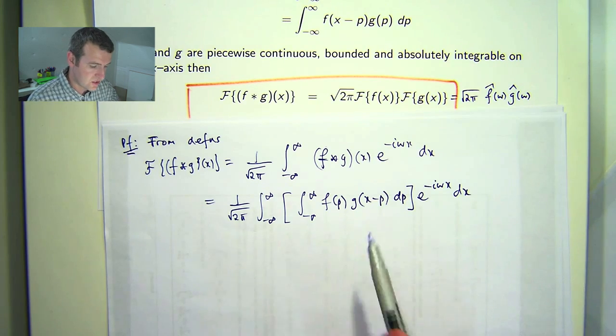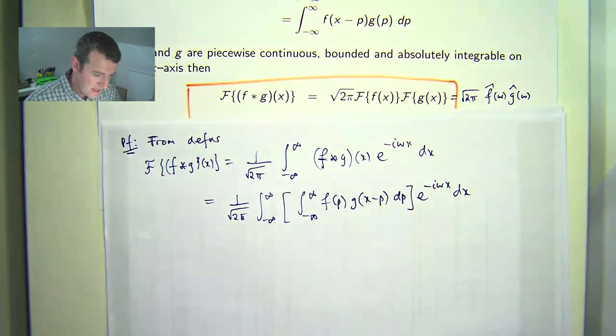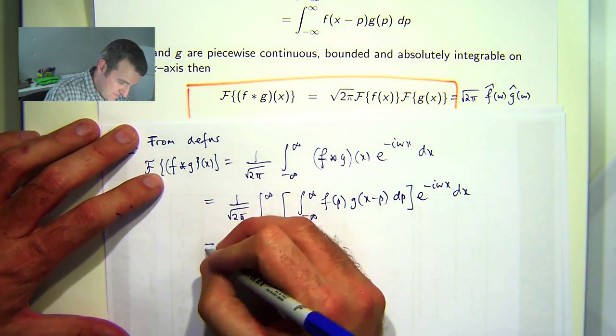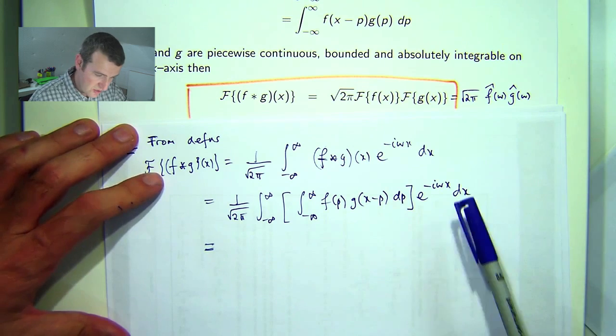and essentially you're just switching the order of integration here. And we can do that because essentially you can think of these infinities as constants, very loosely speaking.